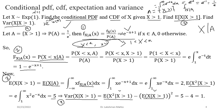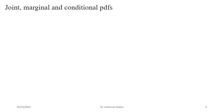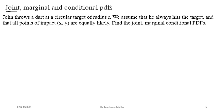Now consider another problem: John throws a dart at a circular target of radius r. The sample space is a continuous region. We assume he always hits the target and all points of impact are equally likely — meaning a uniform distribution — so the density is constant throughout the circular region.